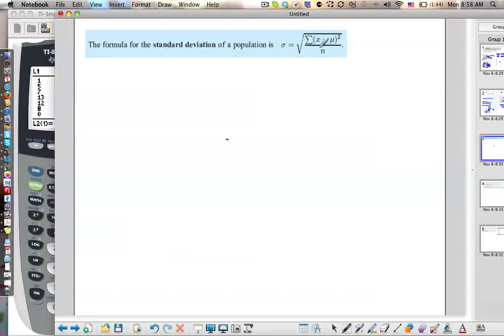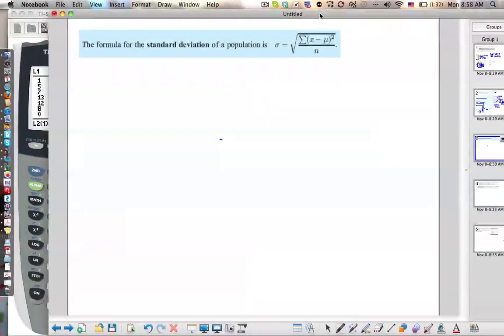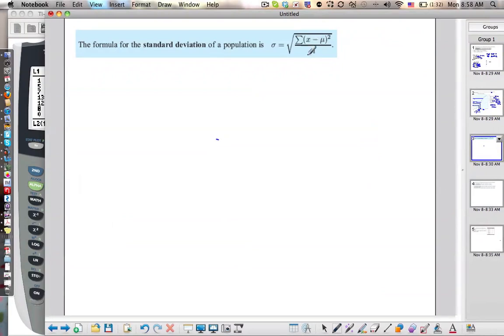Basically, a standard deviation is just a descriptor for the spread. The number itself doesn't really mean anything other than just how big the spread is. And one of the things that I've told kids in the past, it's not exactly, but it's kind of like the average distance away from the mean. I was going to say the same thing. A teacher once told me that it's basically taking all the numbers, and if you calculate the average distance from the mean, it's sort of like the standard deviation.